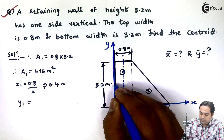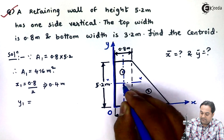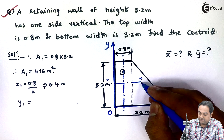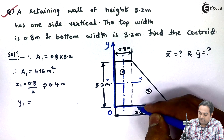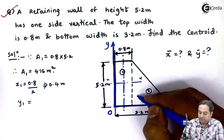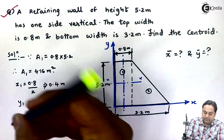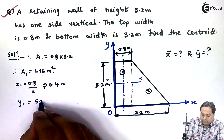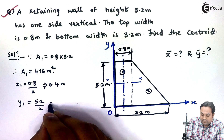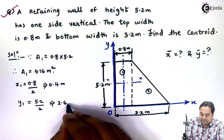Then y1 is the location of the centroid along the y-direction for rectangle number 1. The x-axis for rectangle number 1 is located at half of 5.2 meters from the base, so y1 = 5.2 / 2 = 2.6 meters.